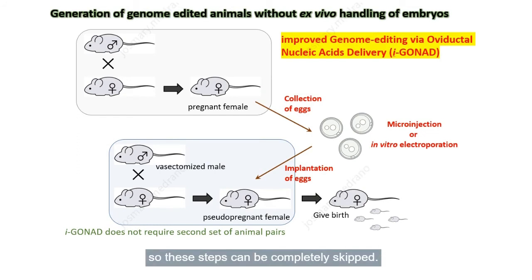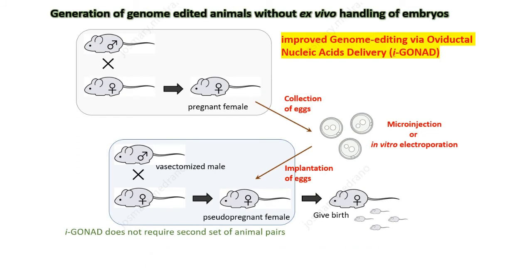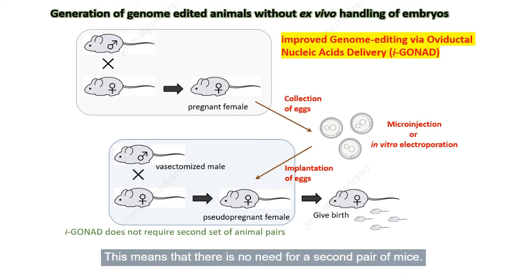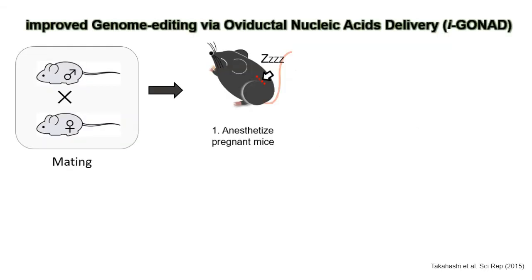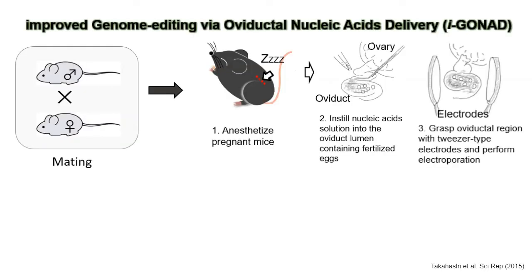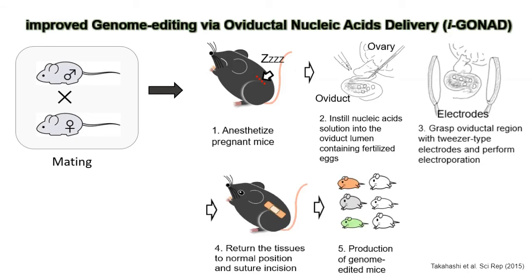This means there is no need for a second pair of mice. After mating, we anesthetize pregnant mice, instill nucleic acid solution into the oviductal lumen containing fertilized eggs, grasp the oviductal region with tweezer-type electrodes and perform electroporation, then return the tissues to their normal position and suture the incision, ensuring production of genome-edited mice.